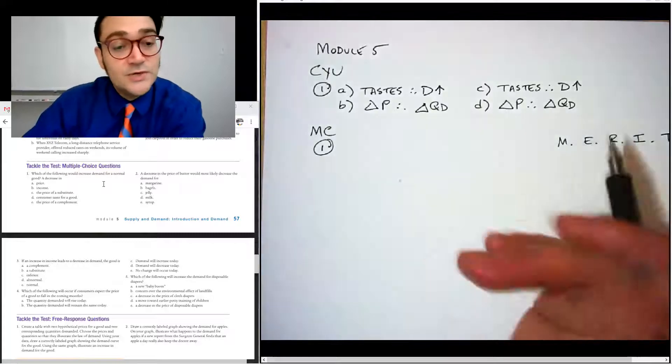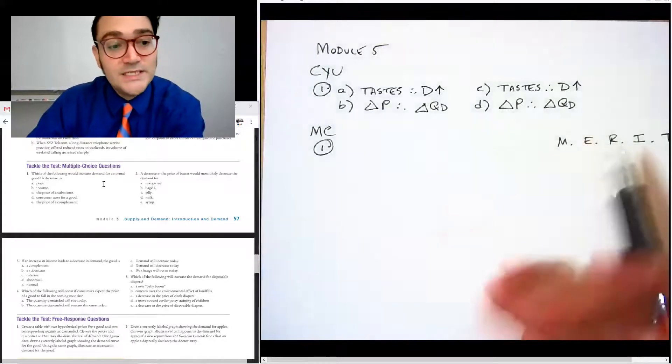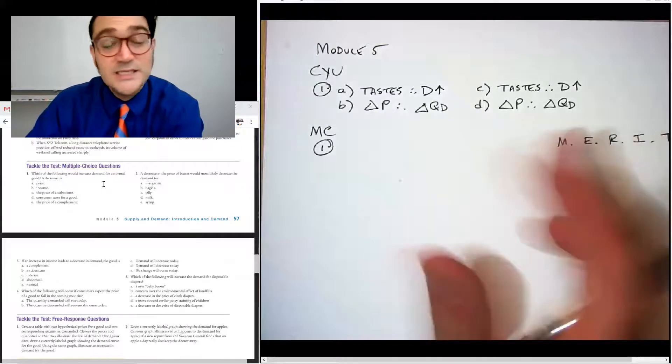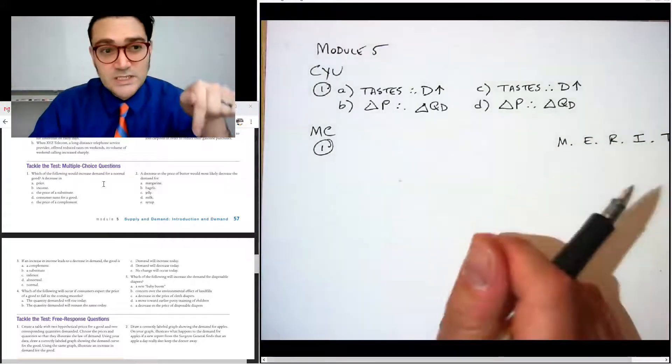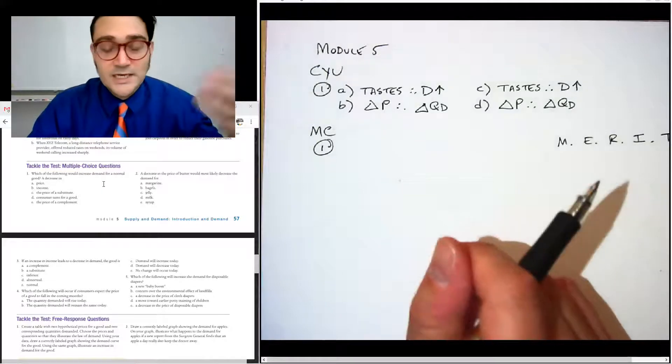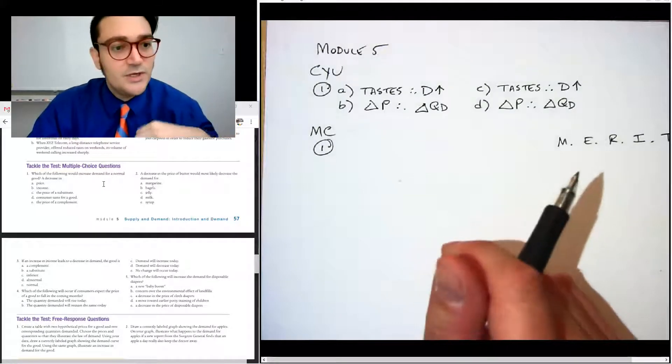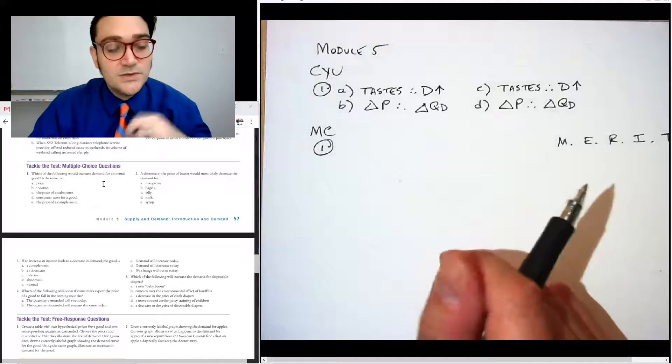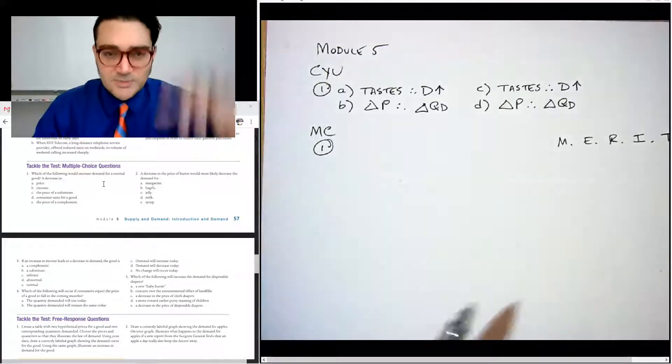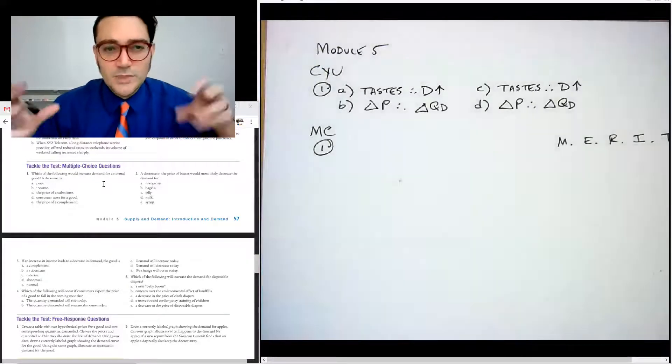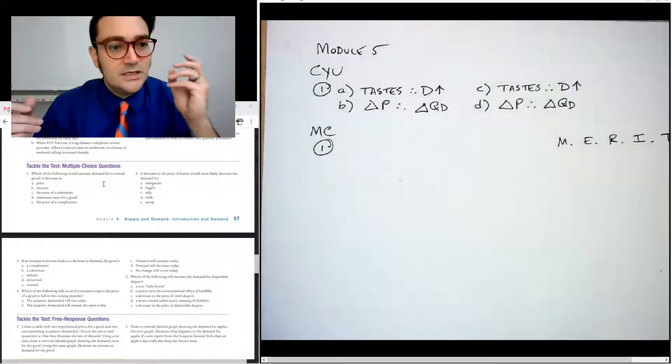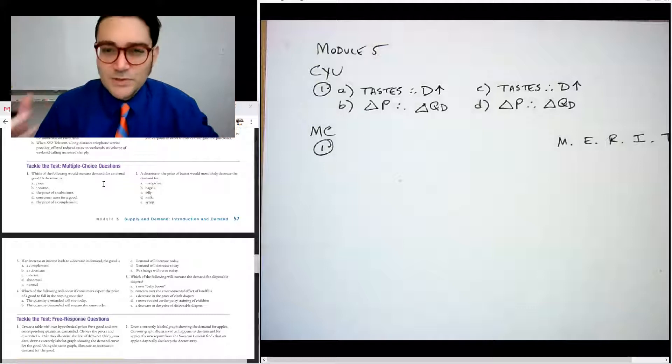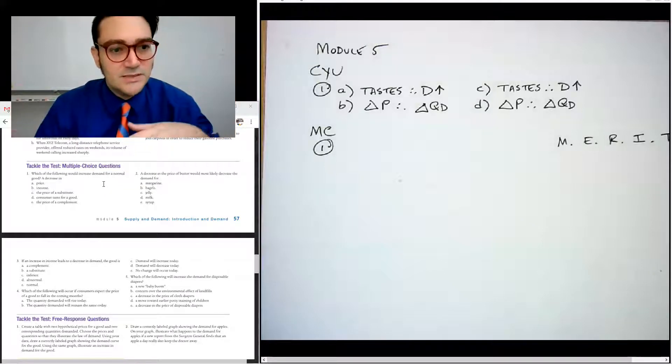Which would increase the demand for a normal good? A decrease in price. No, because price doesn't shift the curve. Income. Well, income's a shifter, but if there's a decrease in income and it's normal, then we would actually expect the demand to decrease with good. The price of a substitute. Okay. So if there's a substitute goes down in price, well, people are going to buy the substitute. They're not going to buy more of whatever this original thing is. Consumer taste for a good. Again, if people don't have a taste for it, that would decrease the demand for it.